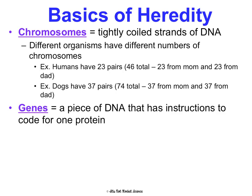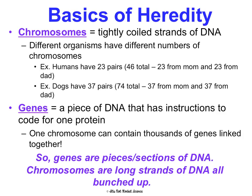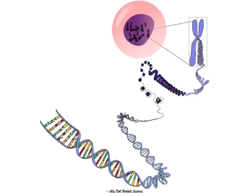Genes are pieces of DNA, or sections of a chromosome, that have instructions to code for one protein. One chromosome — one of these 46 in a human — can contain thousands of genes linked together on it. Chromosomes are long strands of DNA all bunched up; you can see in this picture the nitrogen base pairs and the double helix get coiled up around proteins called histones, tighter and tighter into a chromosome. This shows a duplicated chromosome after the S phase of interphase — it looks like an X with sister chromatids.